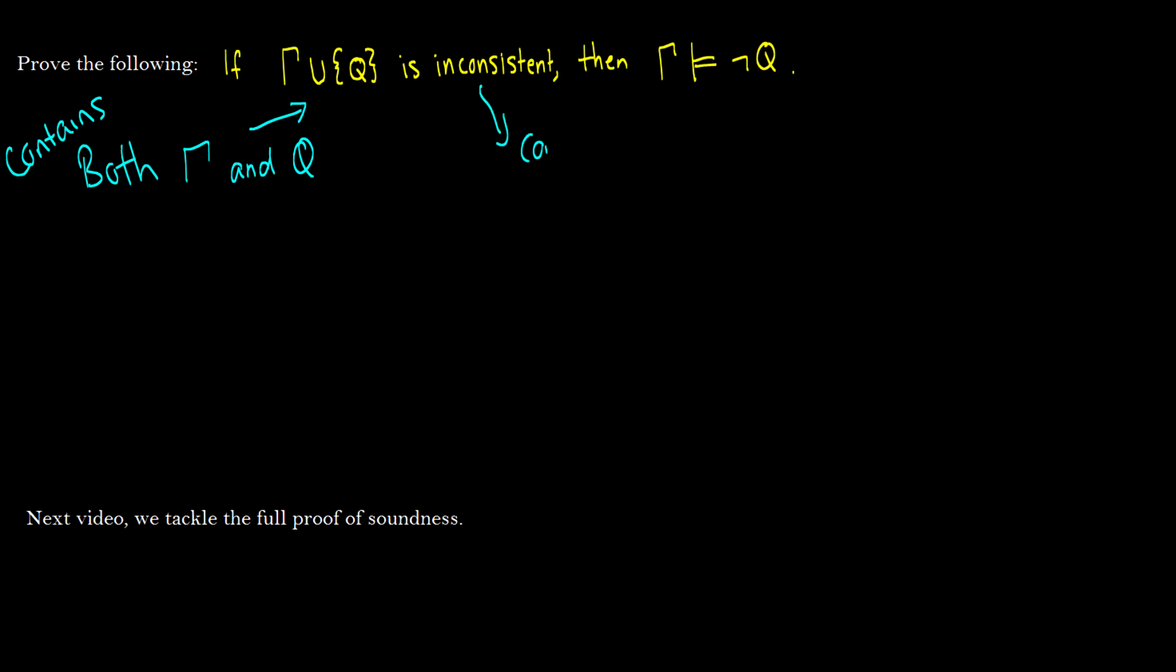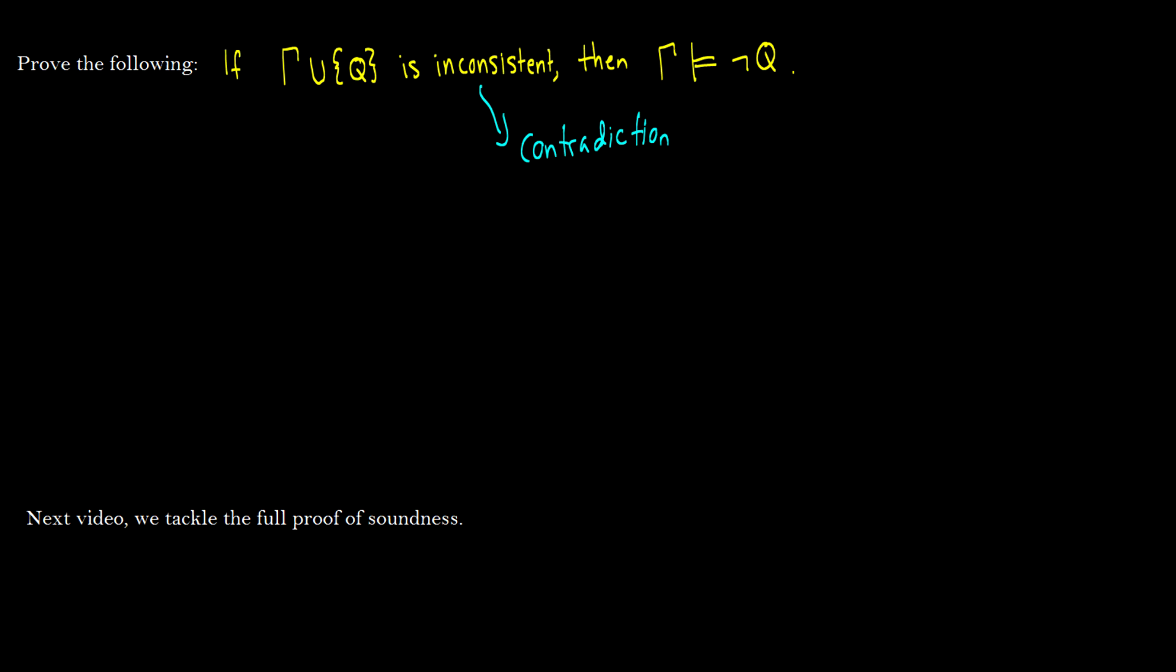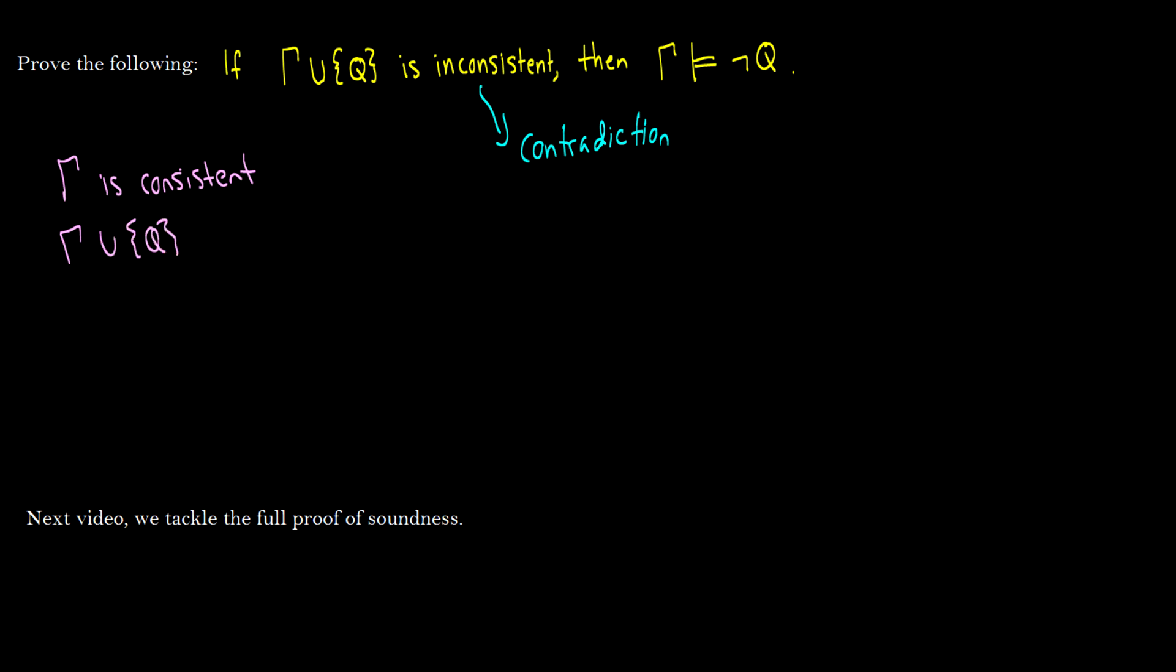So, if gamma and this new atom q is inconsistent, which means it's a contradiction, then gamma is going to entail the negation of that consistency. So, here's what we'll do. We'll start this proof off nicely. Okay. So, we're going to assume that gamma is consistent, meaning that there are no contradictions. And then we'll assume that gamma union q, so when we take q into it, it's going to be inconsistent.